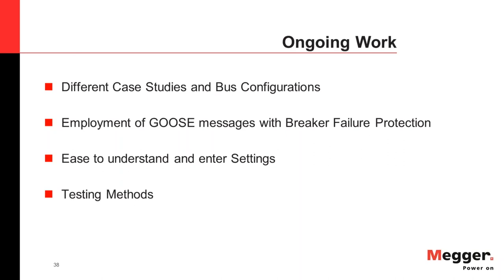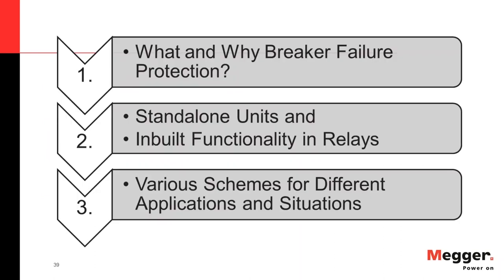Megger has a product line for testing relay protection including Breaker Failure relays. The SMRT product line includes SMRT1 for single-phase, SMRT36 for three-phase, SMRT46, and SMRT410D for more current channels. Software solutions include RTMS for manual testing and AVTS for automated testing. More information is available at us.megger.com.